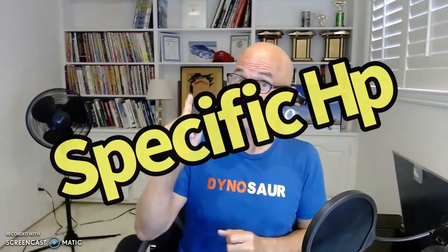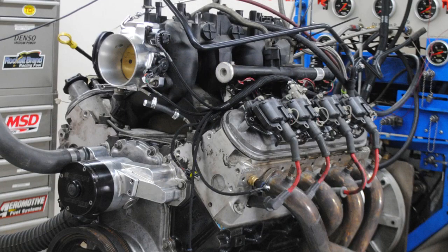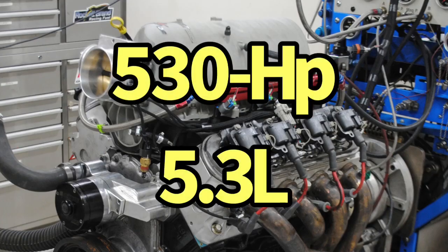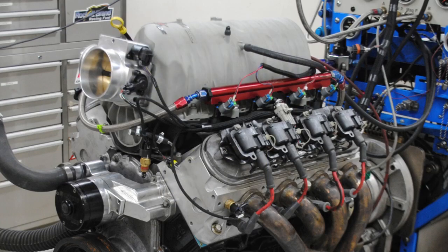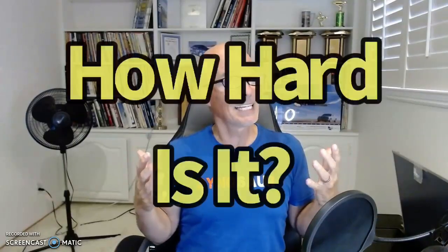Today we're talking about specific power output, more specifically, excuse the pun, 100 horsepower per liter. Well, what does that mean? That means our 4.8 liter LS would have to make 480 horsepower, or our 5.3 liter would need to make a whopping 530 horsepower, or if you're lucky enough to have a 6 liter, that is an even 600 horsepower. But here's the question: is it even possible?